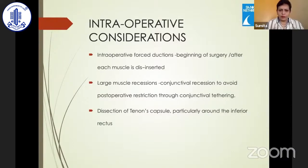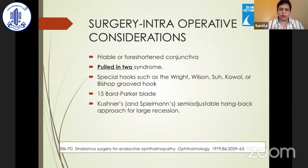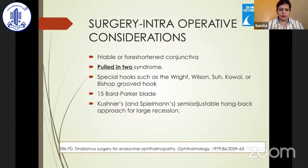Intraoperatively, forced duction tests should be done at the beginning of surgery and again after the muscle is disinserted. Large muscle recession should be combined with conjunctival recession to avoid post-operative restriction from conjunctival tethering. Good dissection of Tenon's capsule in and around the inferior rectus is really important. Challenges during surgery include friable conjunctiva, tight muscles, and the 'hang-in-toe' syndrome. Special hooks like Wright's hook or Wilson's hook can be used. Sometimes a 15-blade Parker knife is required to cut muscles when a tenotomy scissor cannot be inserted. A semi-adjustable hang-back approach is better for larger recessions.